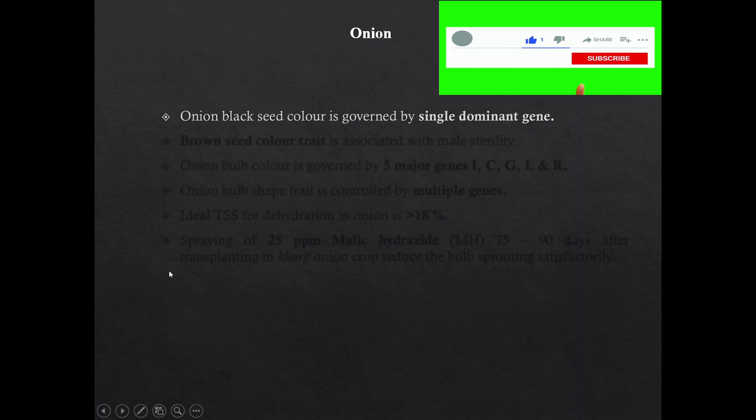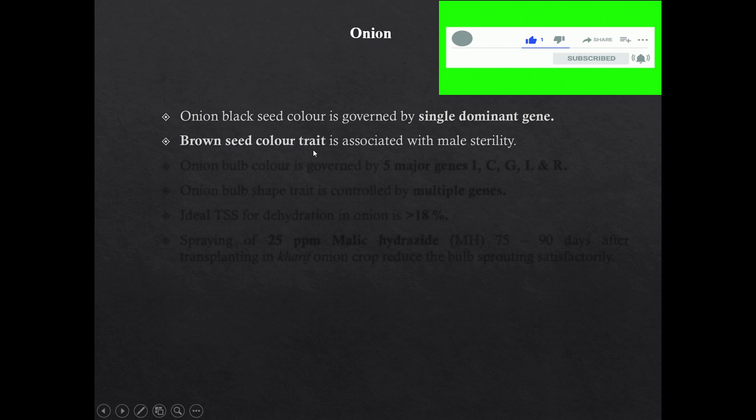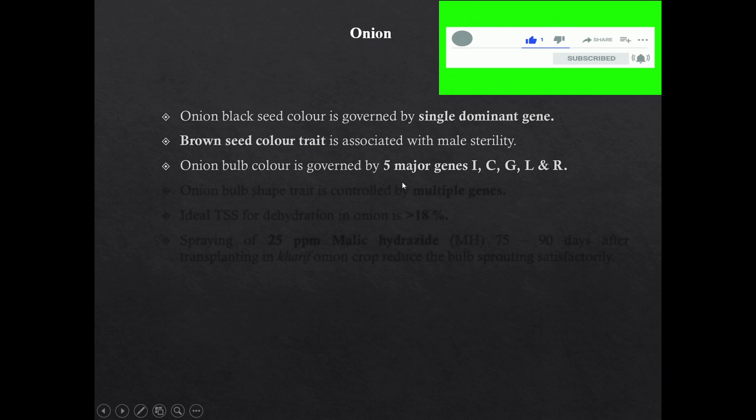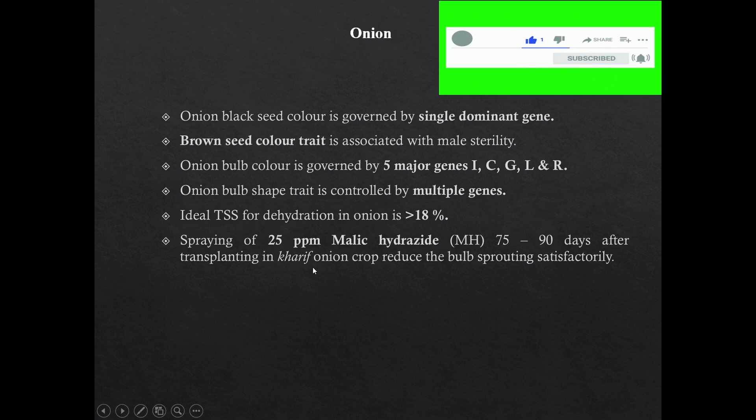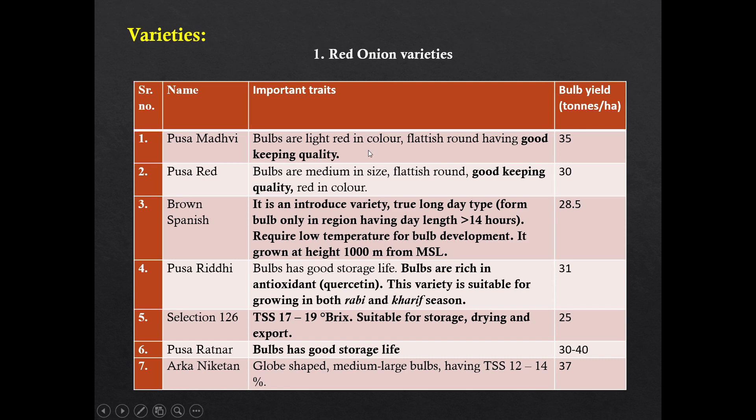In onion, black seed color is governed by a single dominant gene and brown seed color is recessive, which is associated with male seedling. Onion bulb color is controlled by five major genes — I, C, G, L, R. Onion bulb shape is a polygenic trait. Ideal TSS for dehydration in onion is more than 18 percent. Spraying of 25 ppm of maleic hydrazide in onion at 75 to 90 days after transplanting improves storage life and prevents sprouting.